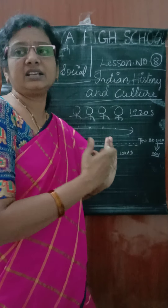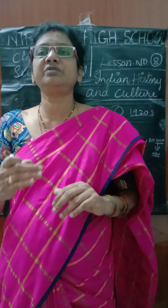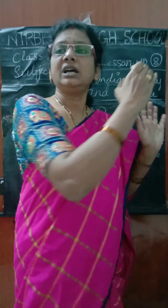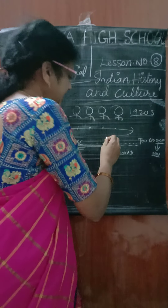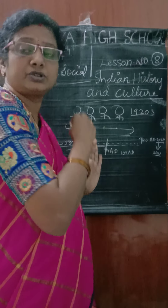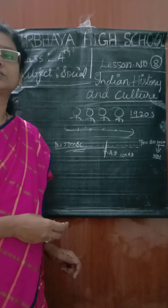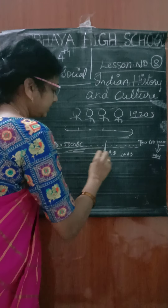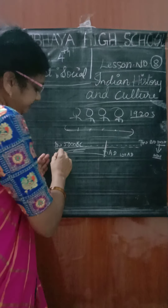The old term BC stands for 'Before Christ', and AD stands for 'Anno Domini' meaning 'Year of the Lord' in Latin. The new terms are BCE meaning 'Before Common Era' and CE meaning 'Common Era'.